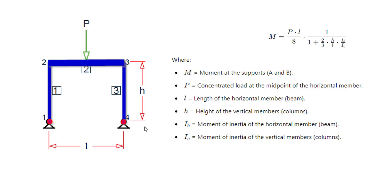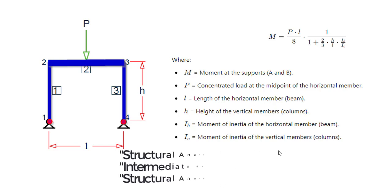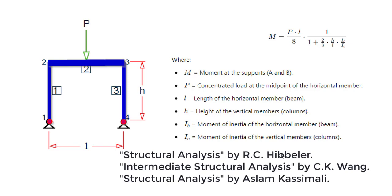The next question that comes to mind is how this equation is derived. It is derived from the analysis of symmetrical portal frames using classical methods of structural analysis such as the moment distribution method or slope deflection method. These methods are covered in well-known structural analysis textbooks. I am providing you the reference names of the books — you can find this equation in any of these books.